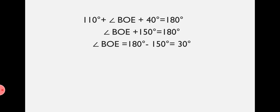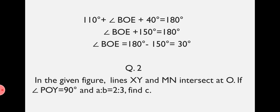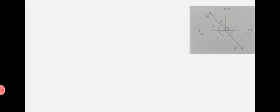Hence, Angle BOE equals 30 degrees. Now, Question number 2. In the given figure, lines XY and MN intersect at O. If Angle POE equals 90 degrees and A is to B equals 2 is to 3, find C. Let's see the figure.